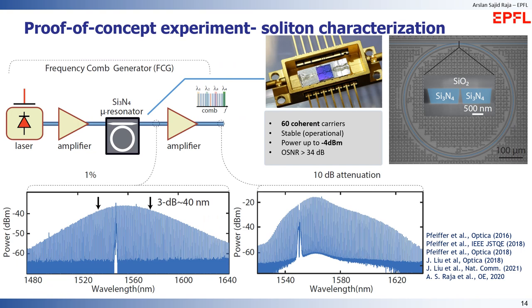From this slide onward, I will explain our experimental results. For soliton generation, we used a single-color laser diode amplified to overcome coupling losses, coupled to a packaged micro-resonator fabricated using the photonic Damascene process — an industrial-scale process developed in our group with very low propagation losses. At a certain laser frequency detuning, we excited a single soliton covering 40 nm 3 dB bandwidth, providing 60 coherent carriers. The soliton spectrum was further amplified, achieving a comb line power of −4 dBm with an OSNR of 34 dB.